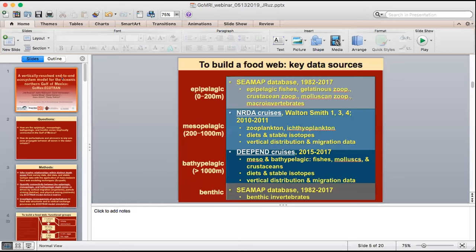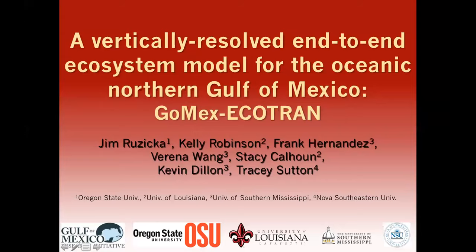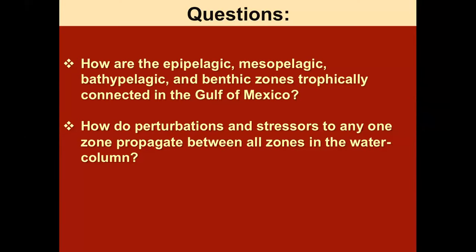This is Jim. I'm talking about a vertically resolved food web model for the oceanic north central section of the Gulf of Mexico. This is a two-year GOMRI project that Frank Hernandez is leading. I'm doing the big end-to-end modeling while Kelly and Stacy Calhoun are assembling the food web portion. Our main questions are: how are the epipelagic, mesopelagic, bathypelagic, and benthic zones trophically connected within the oceanic Gulf of Mexico? And how do perturbations and stressors to any one of these depth zones propagate between all zones in the water column? Our methods are to infer trophic relations within distinct depth zones from survey data, diet data, and stable isotope data, using these to assemble a mass-balanced food web model. The most common food web modeling technique globally now is Ecopath, but we're expanding upon that.